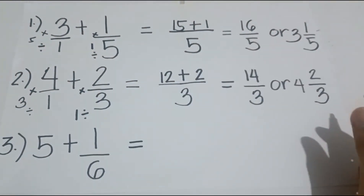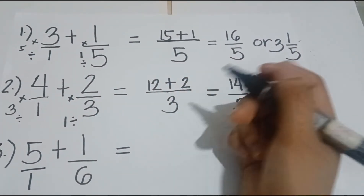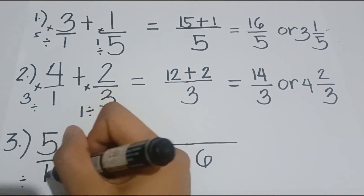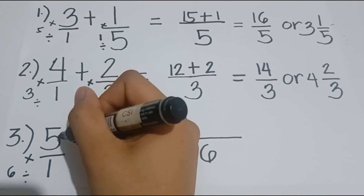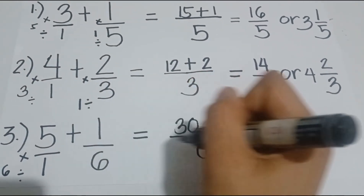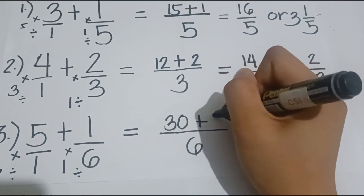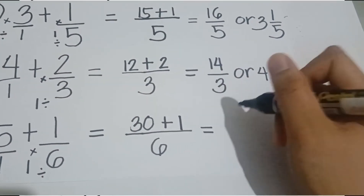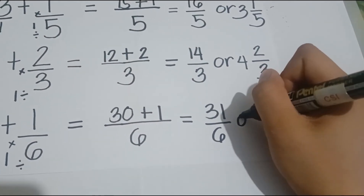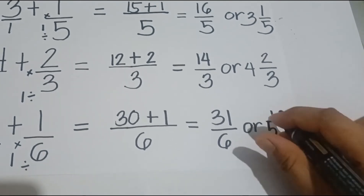Next, example number 3: 5 plus 1 sixth. We add 1 as the denominator for 5. We find the LCD of the two fractions — the LCD is 6. So 6 divided by 1 is equal to 6, multiplied by the numerator 5; 6 times 5 is equal to 30. Plus, 6 divided by 6 is equal to 1, times 1, so we add 1. The answer is 30 plus 1, equal to 31, all over 6. In simplified form, the answer is 5 and 1 over 6.